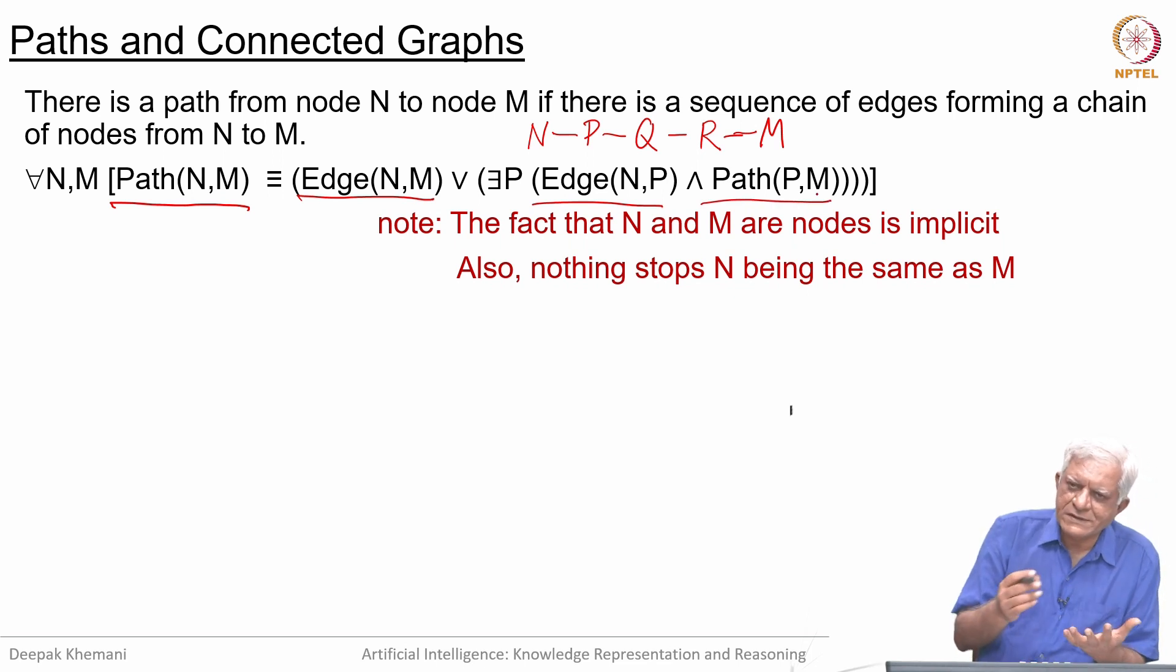We have a recursive definition. You have a path from N to M if there is some node for which there is an edge from N to P and there is a path from P to M. The fact that N and M have to be nodes is implicit because we have already stated that edges can only be between nodes.